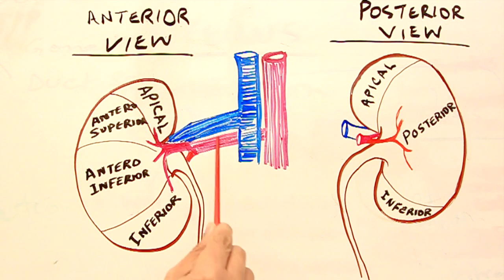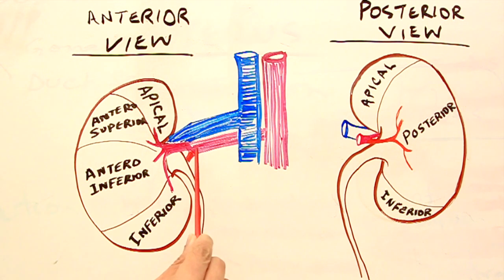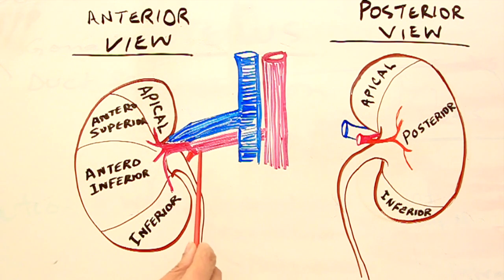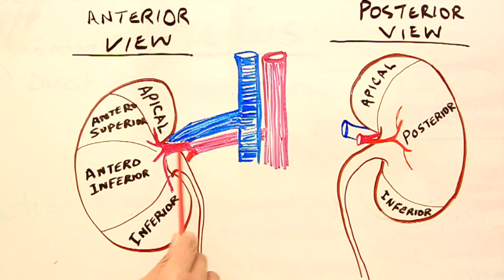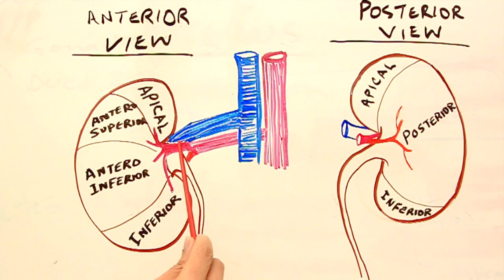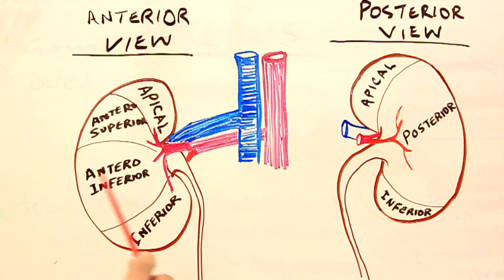Each renal artery, before entering the kidney, divides into an anterior — which is a larger division — and a posterior, smaller division. Then these two divisions enter the kidney through the hilum.